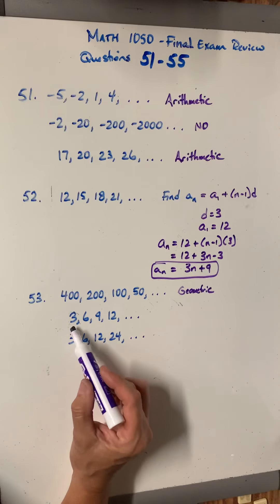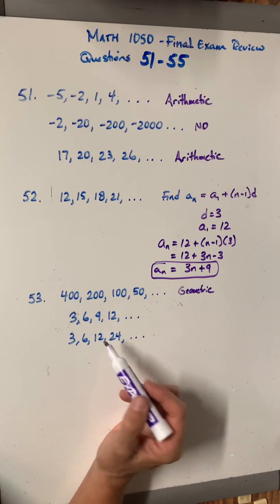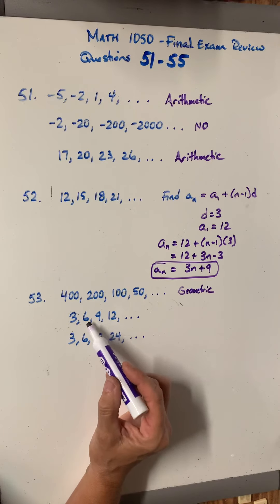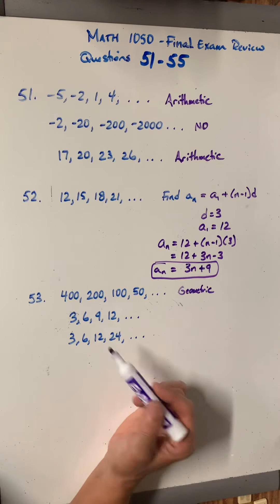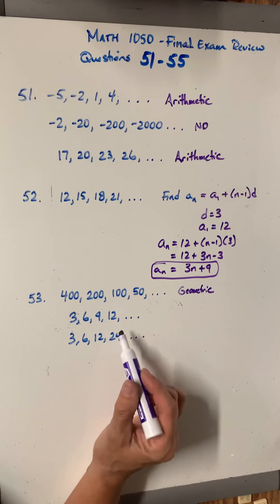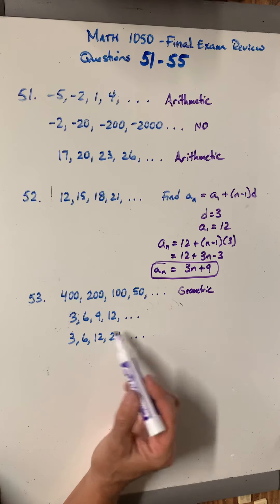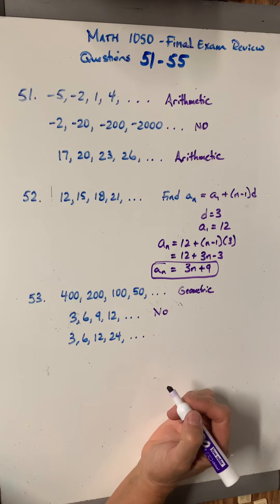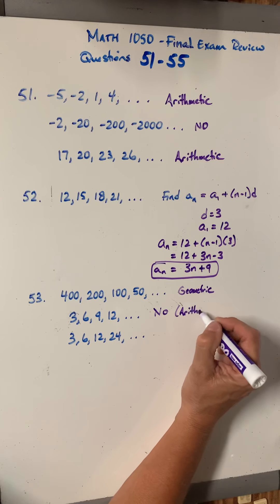So how about this one? 3, 6, 9, 12. Well, let's use our formula. What's 9 divided by 6? Well, it's like 3 halves, right? What's 6 divided by 3? It's 2. Those aren't the same answers, so this is definitely not geometric. What's happening here is we're adding 3 each time, so this would be arithmetic, but they don't ask us for that. They just say, is it geometric? And the answer is no. Oh, maybe they do ask. Well, anyways, this is arithmetic because we're adding each time.